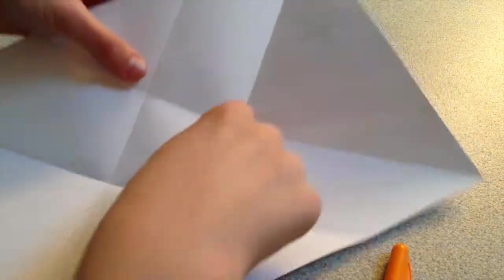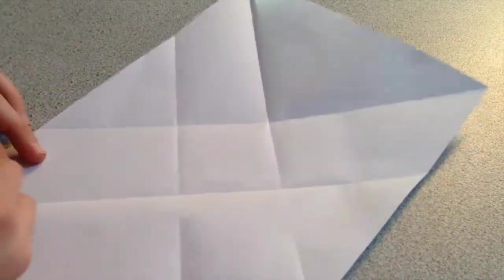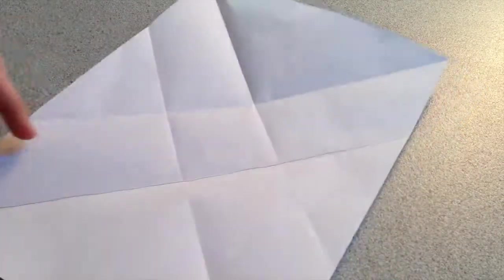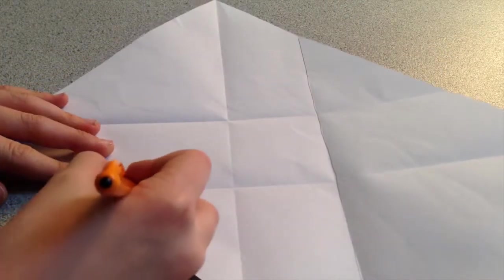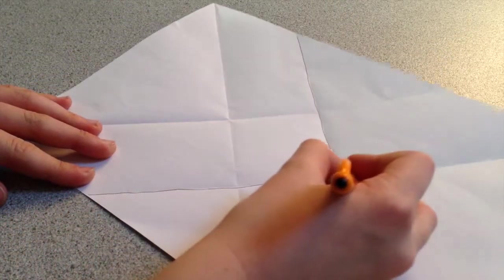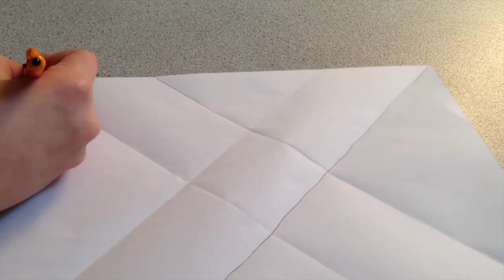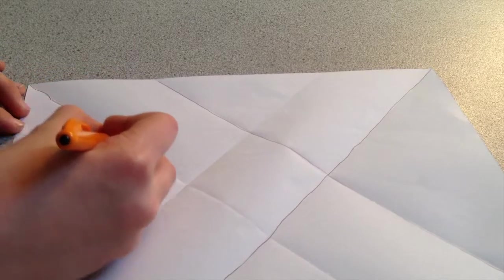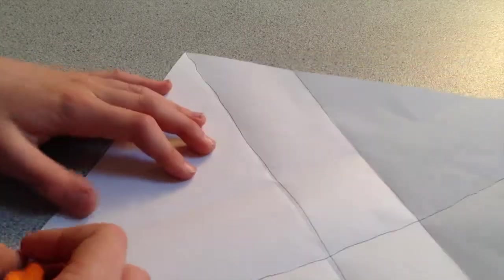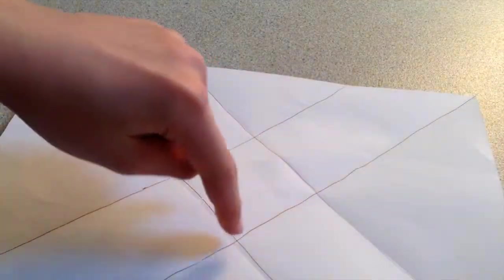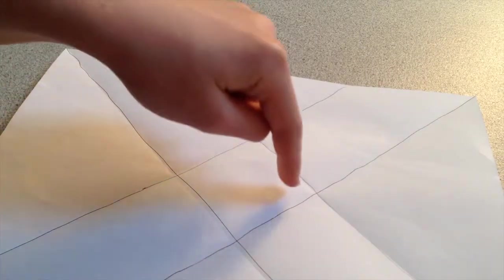Now there's this square. So we have these creases here, here, here, and here. So this center square I'm going to work on next.